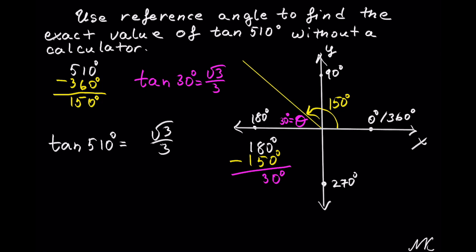We are almost done. We just need to know whether or not this value is positive or negative in this quadrant. So we have all students take calculus. This means that all are positive in the first quadrant, sine and its reciprocal is positive in the second quadrant, tangent and its reciprocal is positive in the third quadrant.